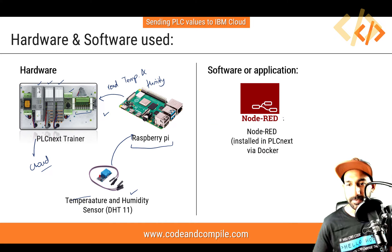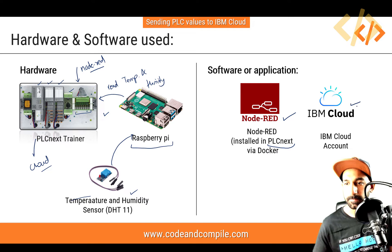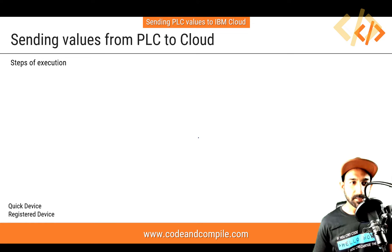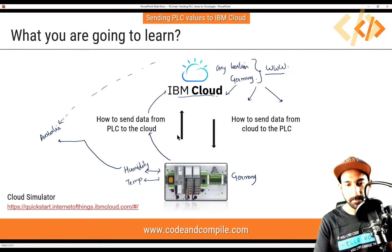For software, you need Node-RED. In my example, I've already installed Node-RED in PLC Next, so the software is already inside the PLC Next. You also need an IBM cloud account, which you can make for free — there are some free services you can use. Step one is to read the values in Node-RED. I'm going to show you from my last example.